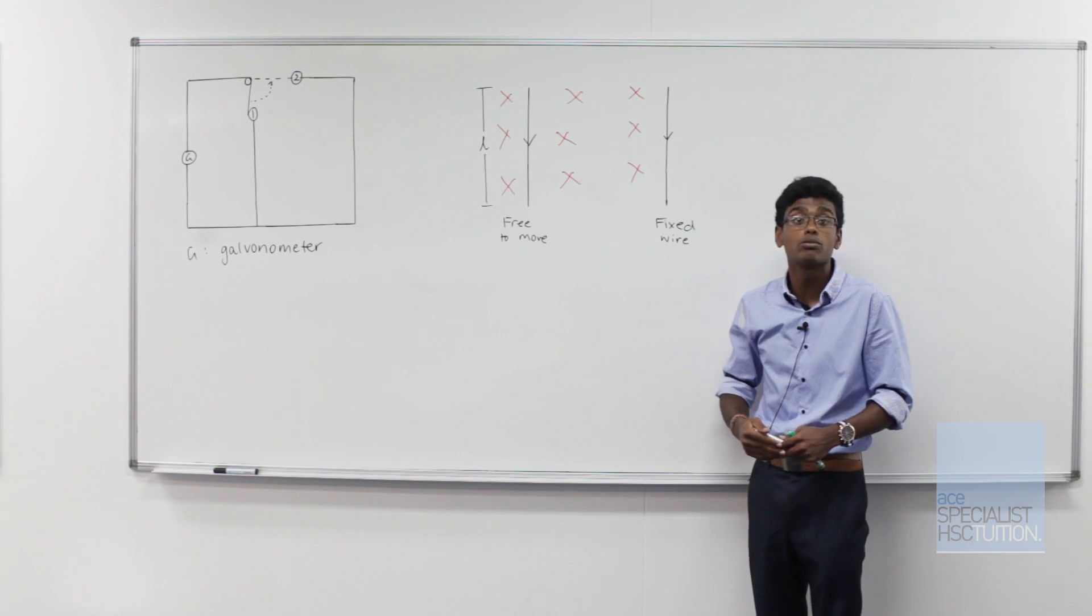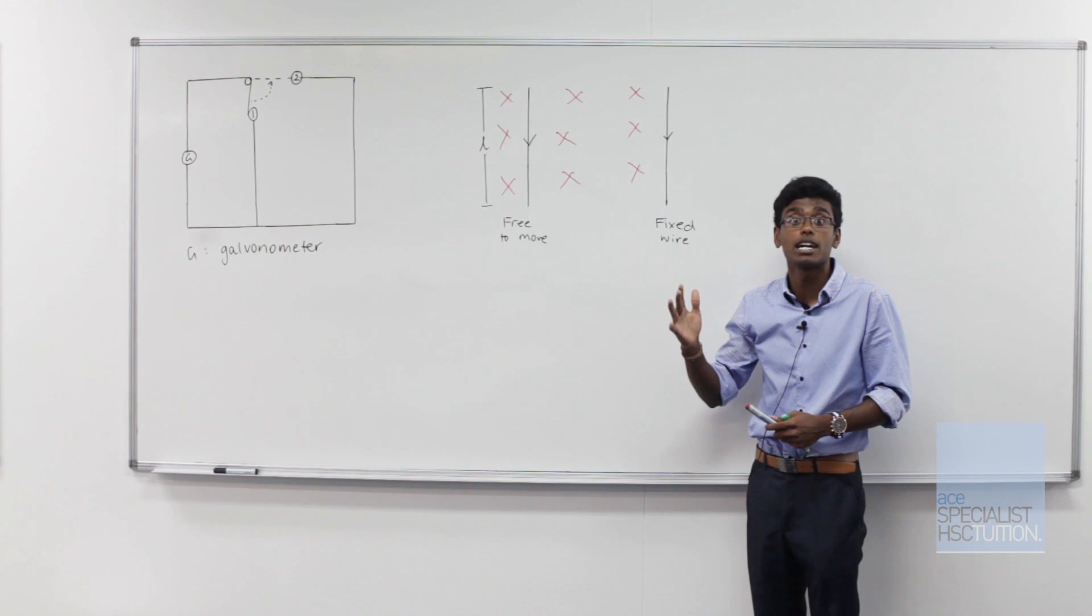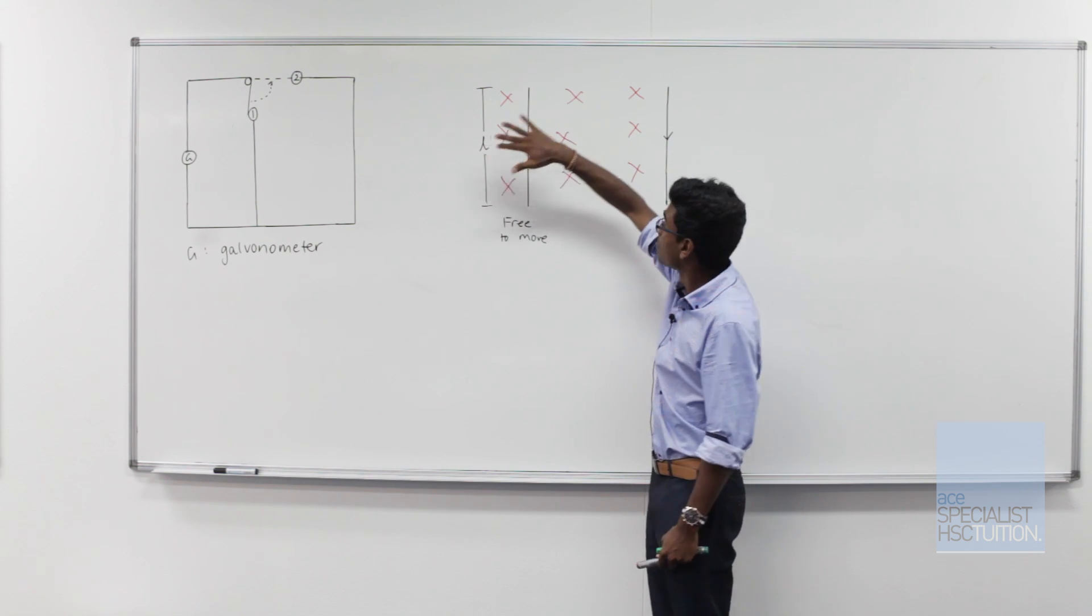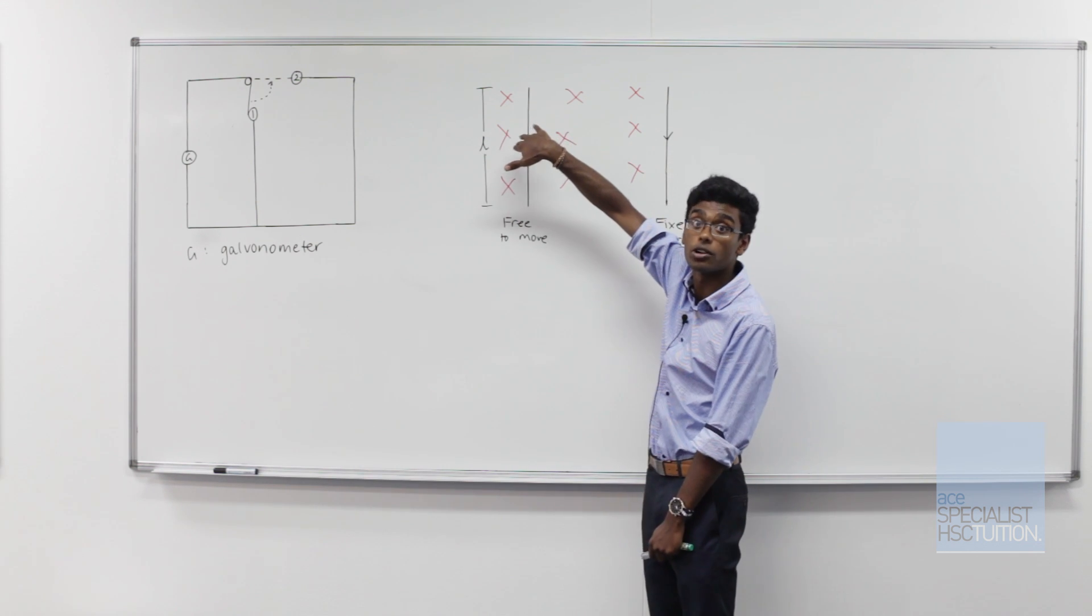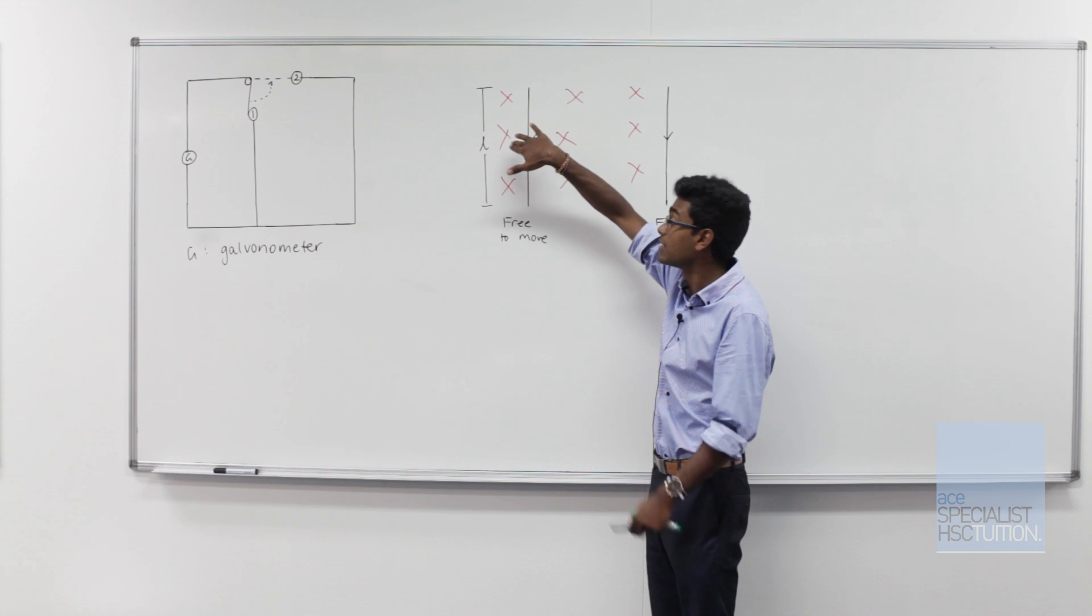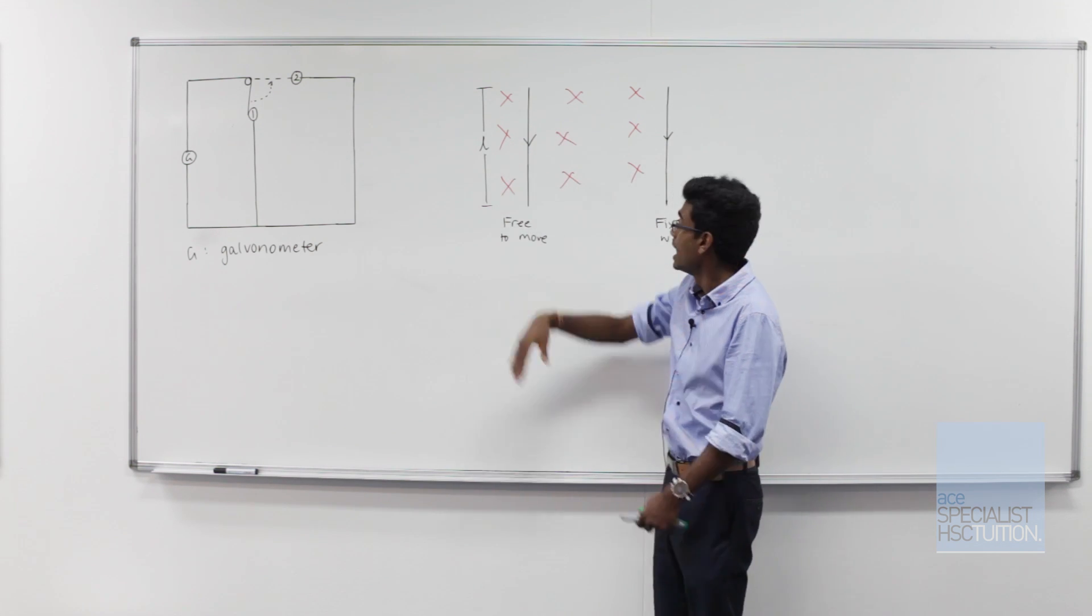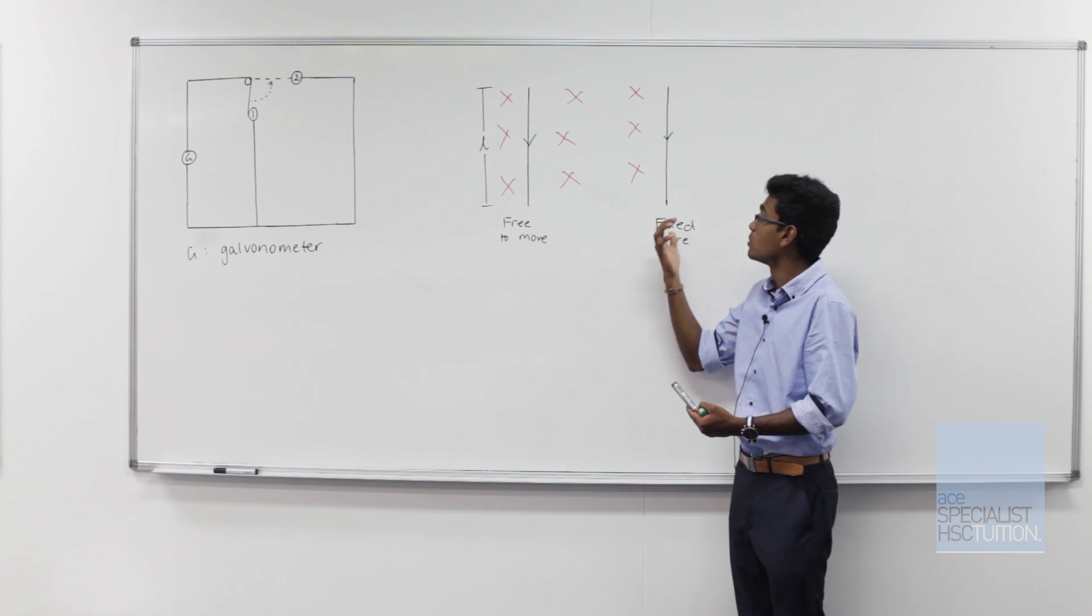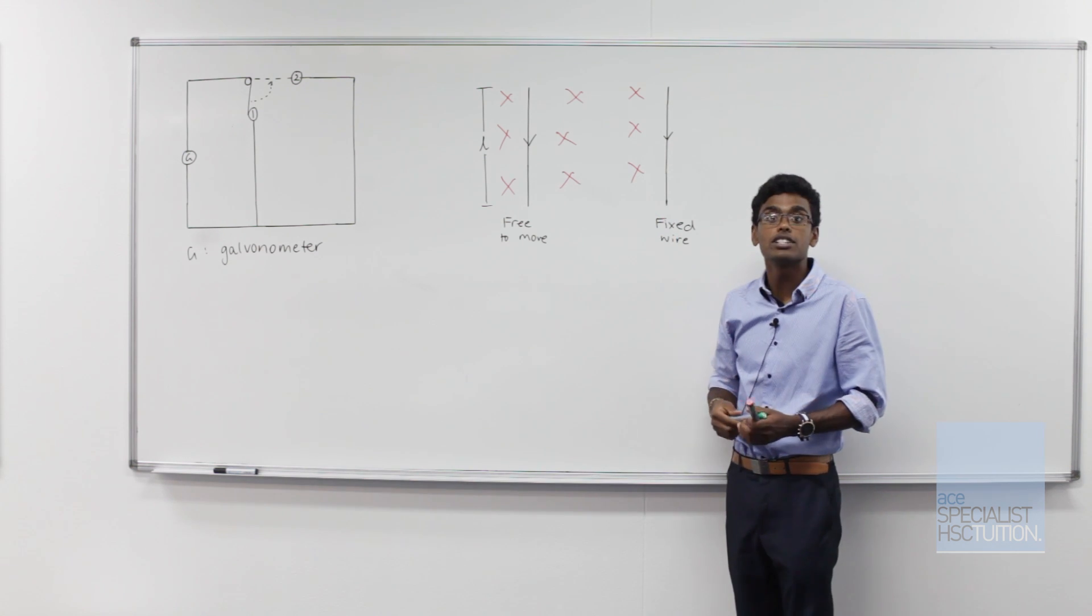We can work out the direction of the force using the right hand palm rule. I point my thumb down the page following the current, my fingers into the page following the magnetic field, and you can see the force is to the right. Since my wire is free to move, it's going to start moving across towards the fixed wire.